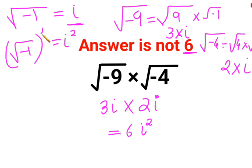Right? So I can say value of 6i square is 6 multiplied by minus 1, which gets you minus 6. This is the answer for this particular question.